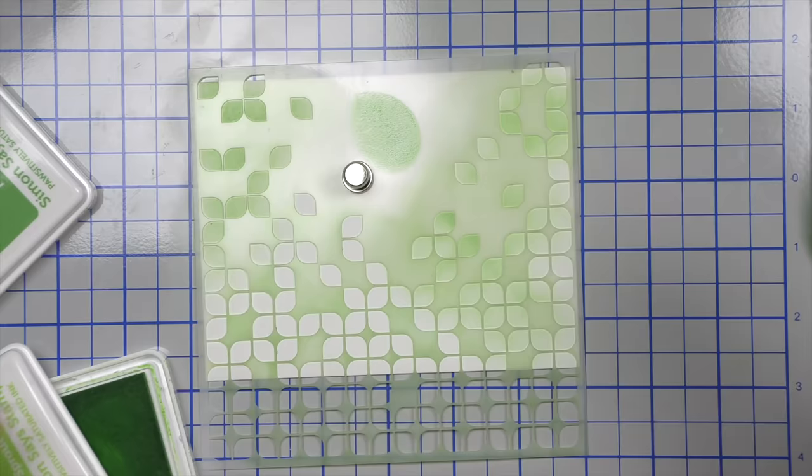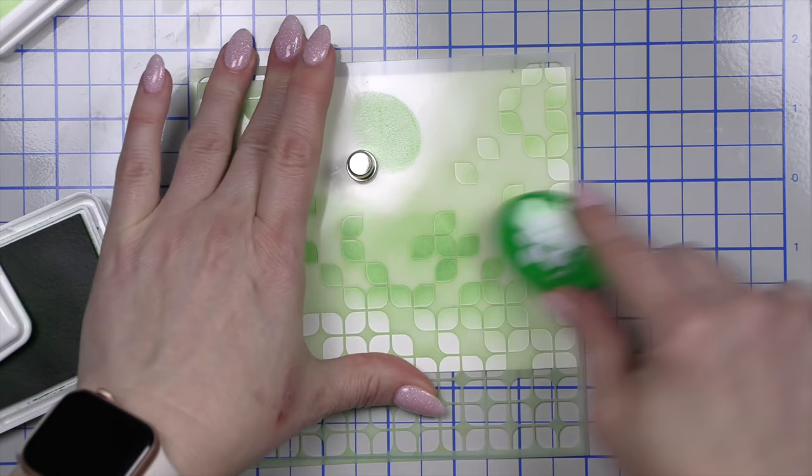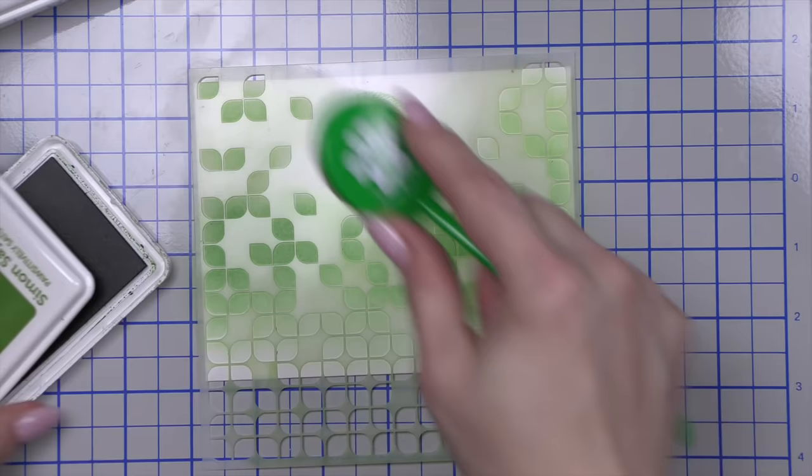We are simply going to take Sprout, Fairway, and Field inks, and we're not going to ink the entire white envelope like I did with the card base, but we are going to stencil that Geo Leaves design.